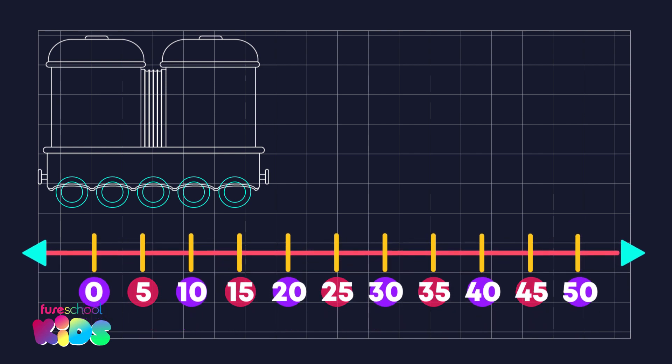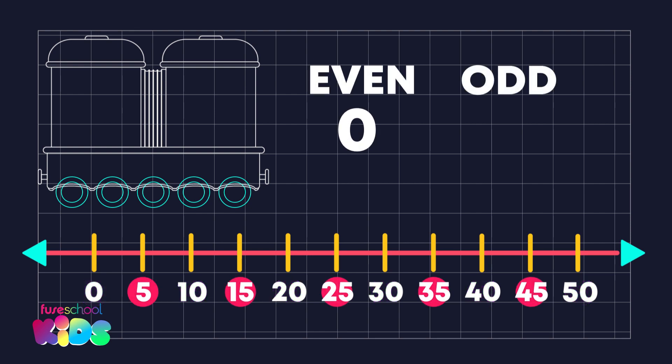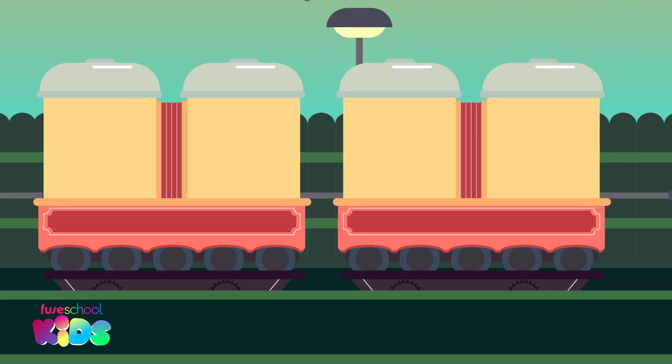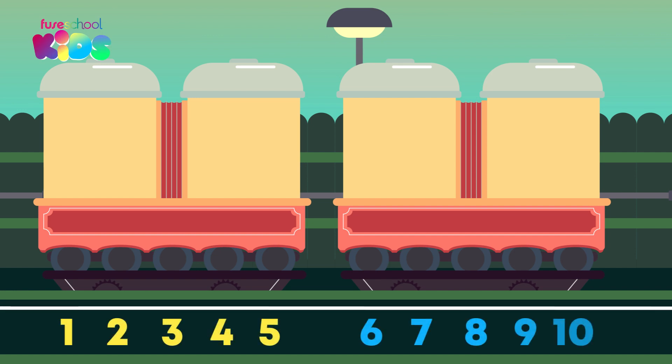These numbers are even because they end in 0. These numbers are odd. How many wheels does the train have? 5, 10. That's right.